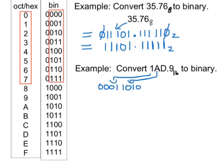For D, looking up the table, D is 1101, so we write 1101. Then we put in our fractional point, and lastly for nine, we write 1001. The zeros at the beginning of the number don't affect the size of the number, so we don't need to write these. There are no zeros at the end.